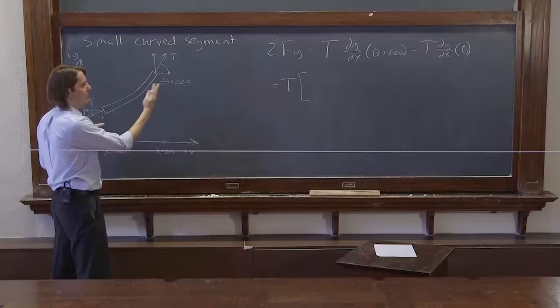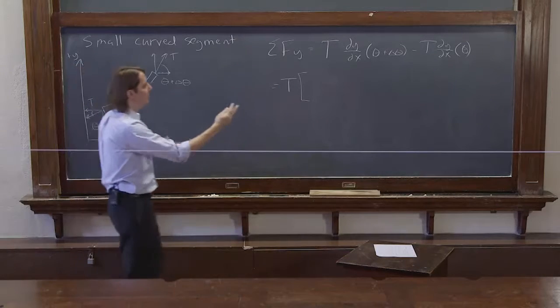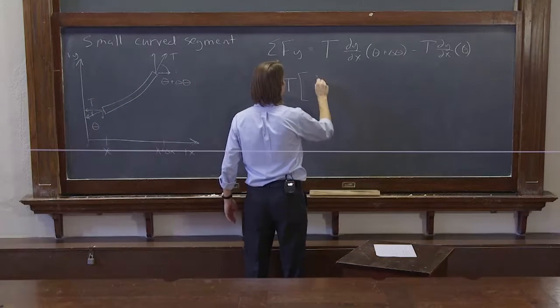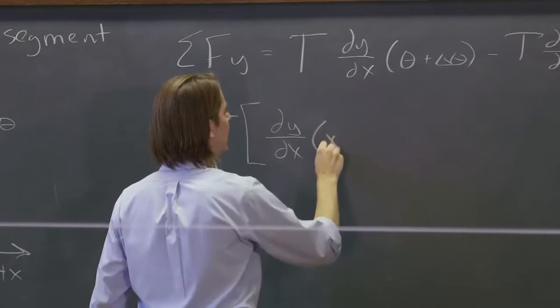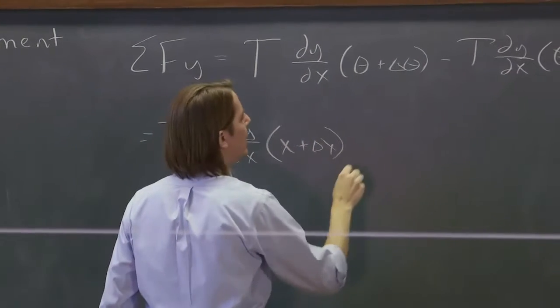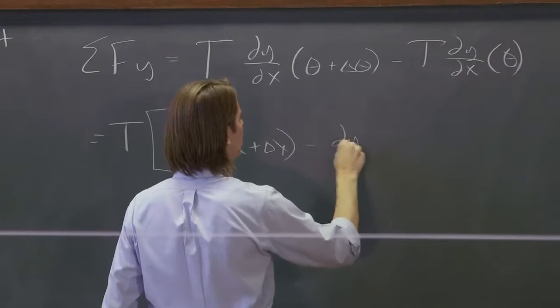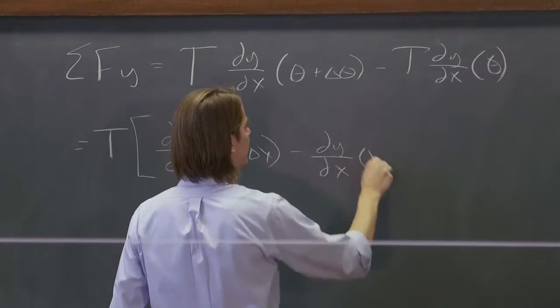That's just telling you where. It's not actually being multiplied by theta. There's no unit involved. So we can write it as dy/dx at x plus delta x minus dy/dx at x.